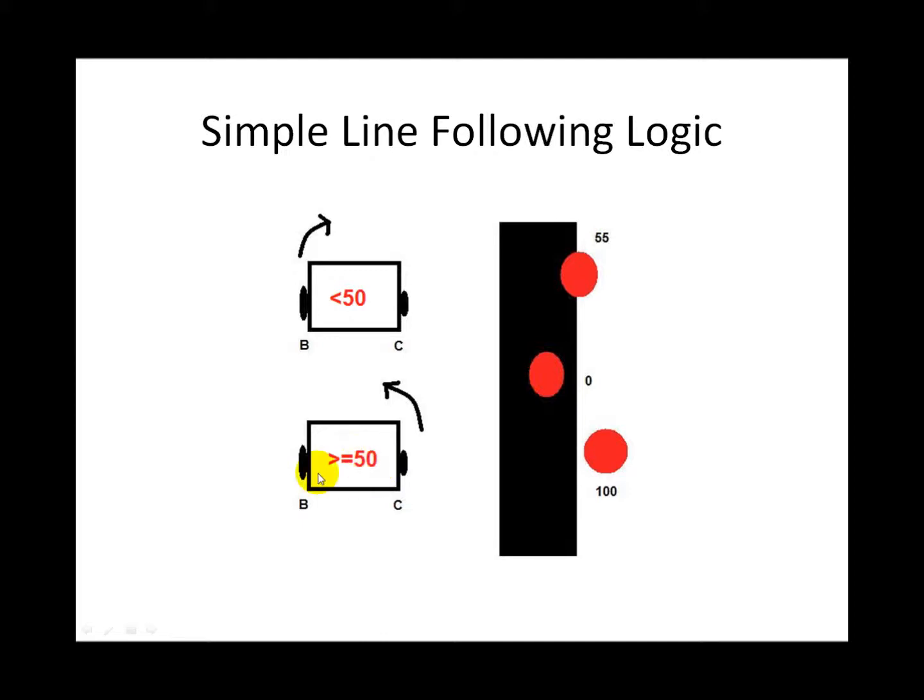This is the condition for the light sensor. When the light sensor is greater than or equal to 50, motor B is going to turn off and motor C is going to keep going, which causes the robot to turn to the left. If the light sensor sees something less than 50, motor C is going to turn off stopping this wheel, and B will keep going causing the robot to turn to the right.